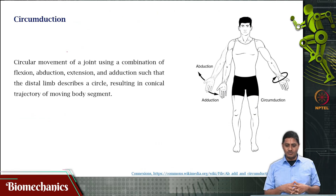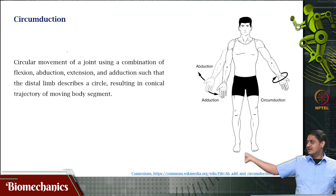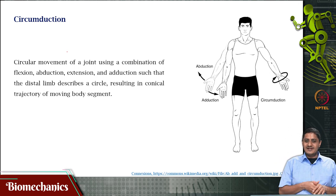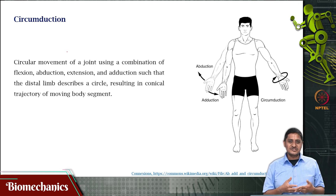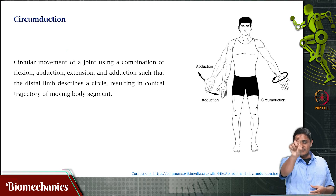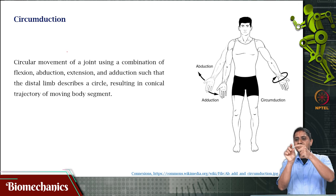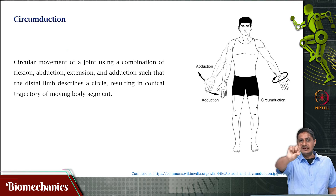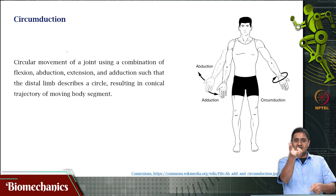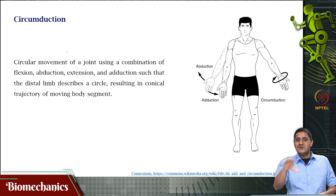Then you have this special movement called circumduction. It is not a movement that happens in a single plane. This is actually a combination of flexion, extension, abduction, and adduction such that the distal limb describes a circle. If you take the locus of the tip of my thumb and index finger, it will actually make a circle. This is called circumduction — it describes a circle resulting in a conical trajectory. Essentially, I will be making a cone whose base is that circle I am describing using this movement.